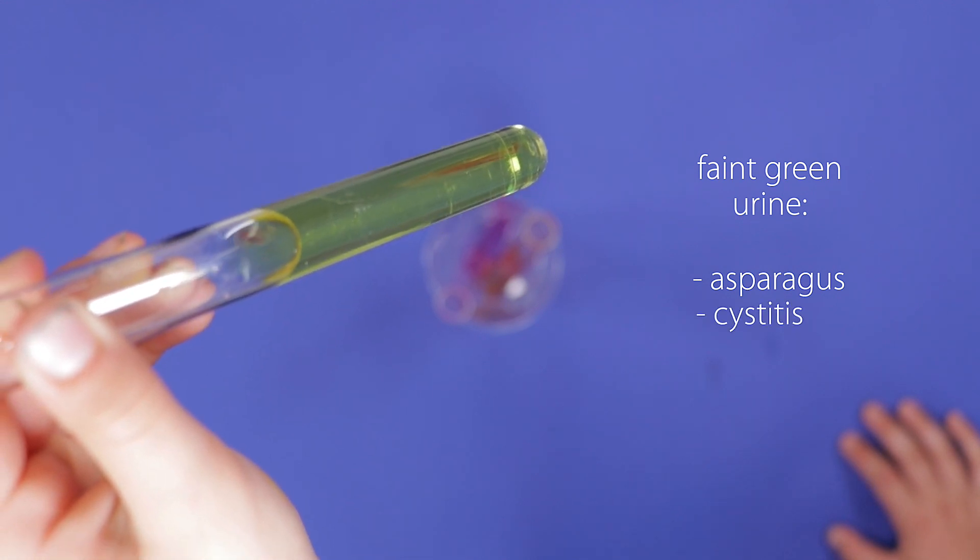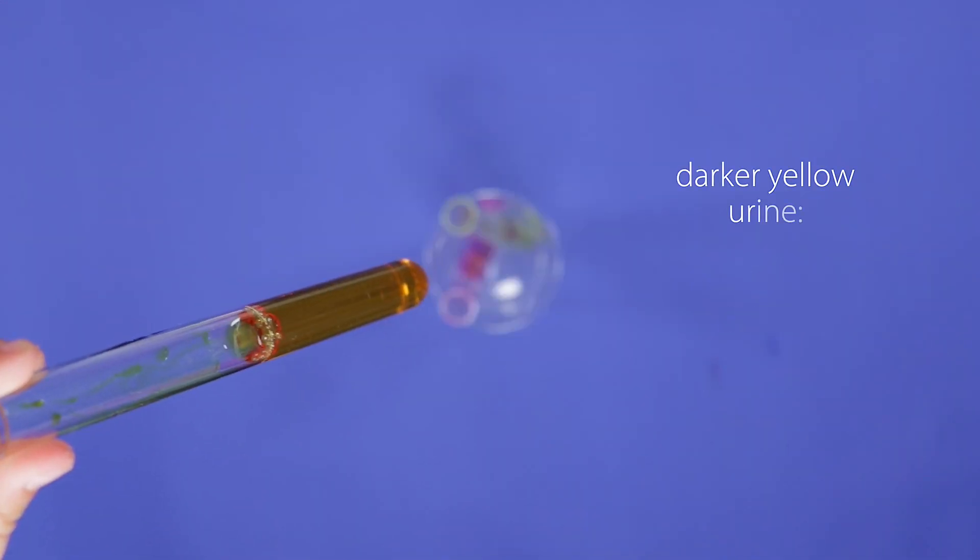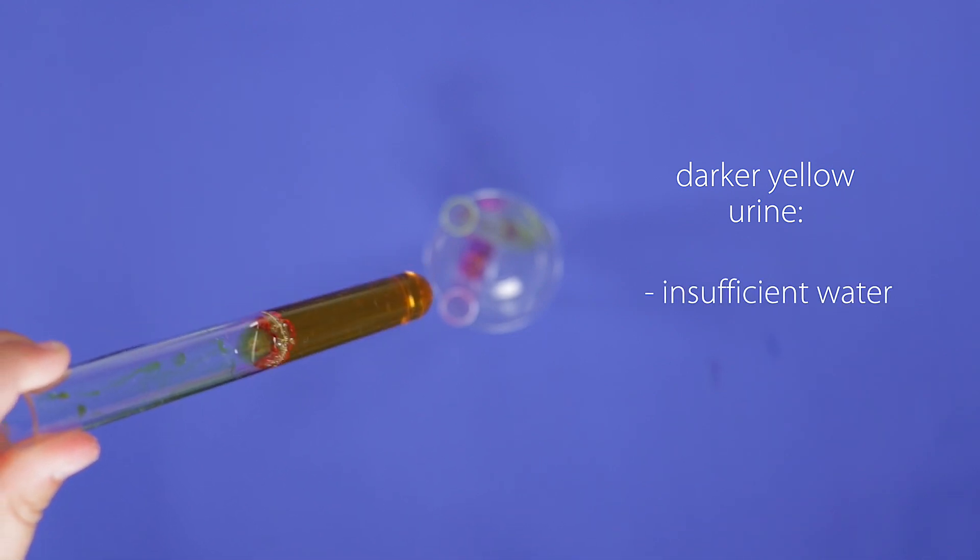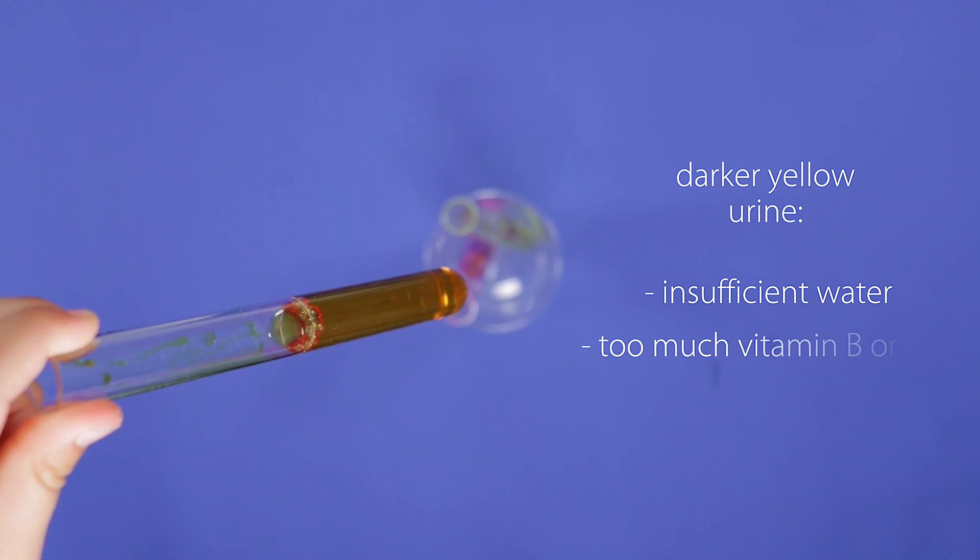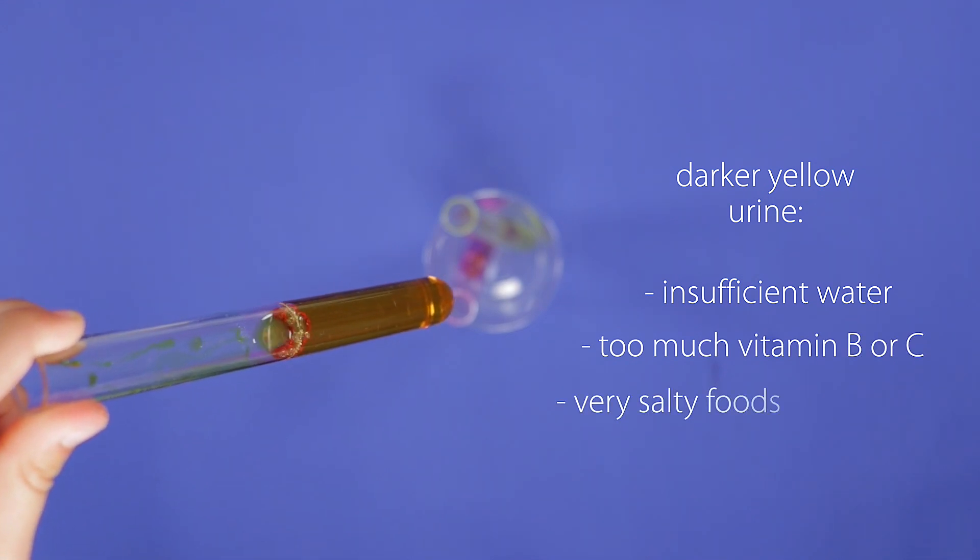A more concentrated yellow-orange colour could mean you haven't had enough water to drink or you've consumed too much vitamin B or C or very salty foods.